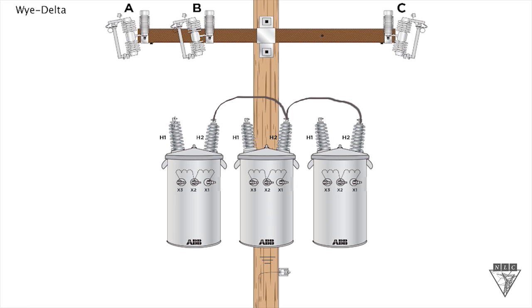Now each H1 bushing is just going to go up to a phase. Take this H1 over to C phase. So we've got our H1's going to each phase, A, B, and C phase, and our H2's are connected together but not to ground. That's our primary Y connection.